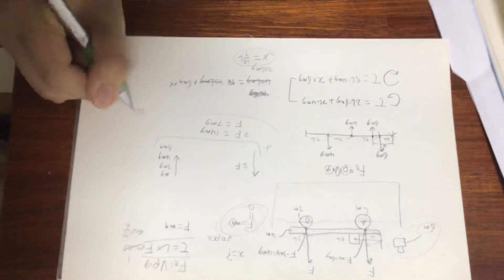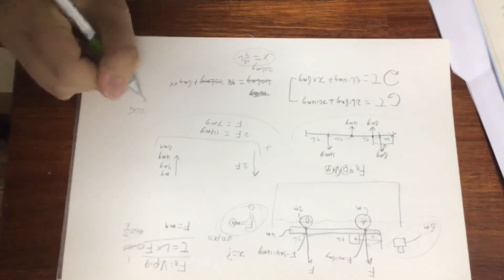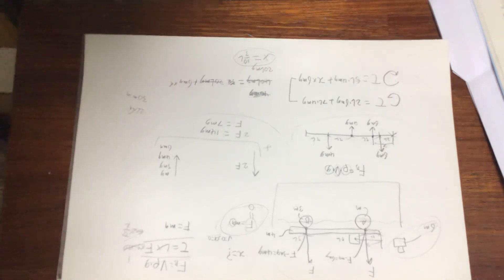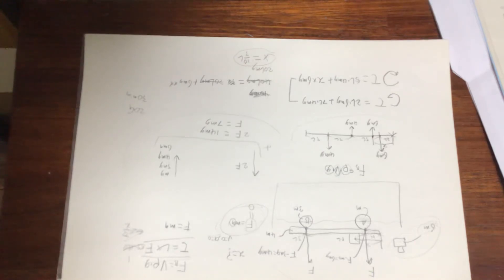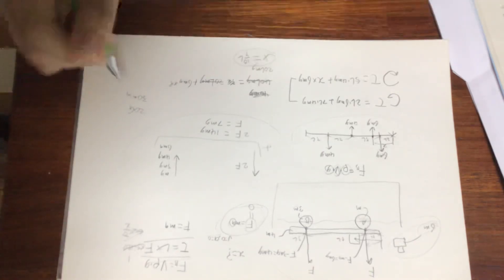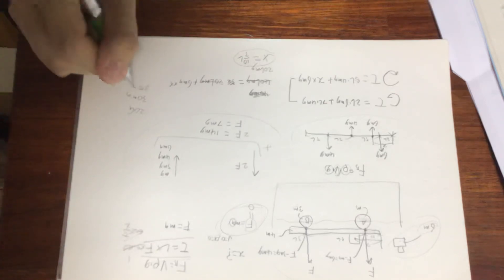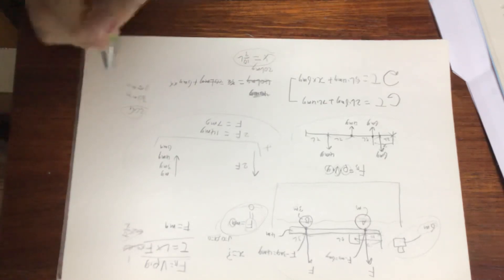Given that you're supposed to solve 20 questions in 30 minutes — including checking your answer card for mistakes — you really have about 25 minutes for 20 questions. It's pretty hard.